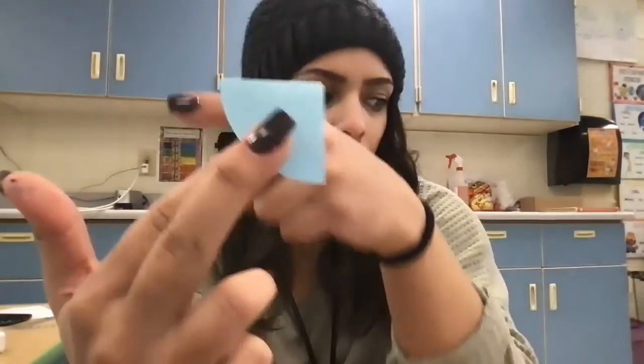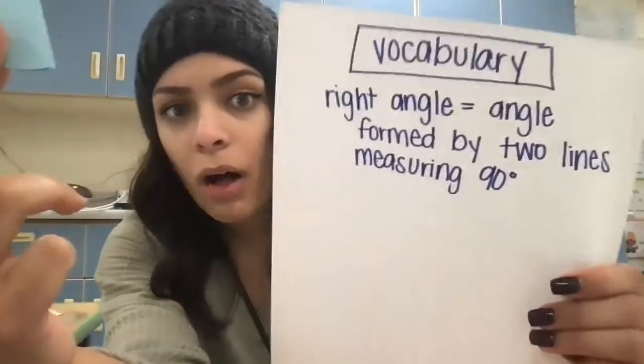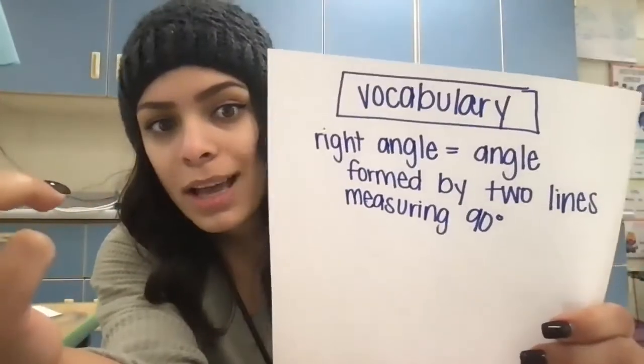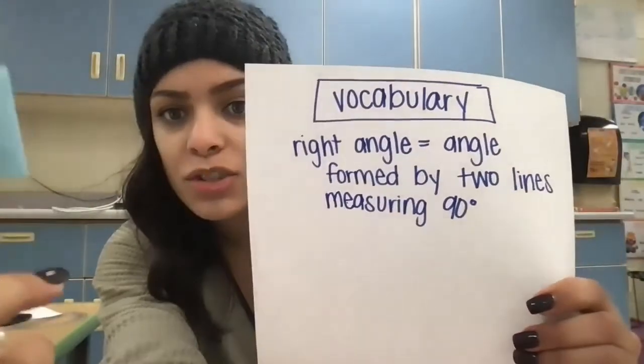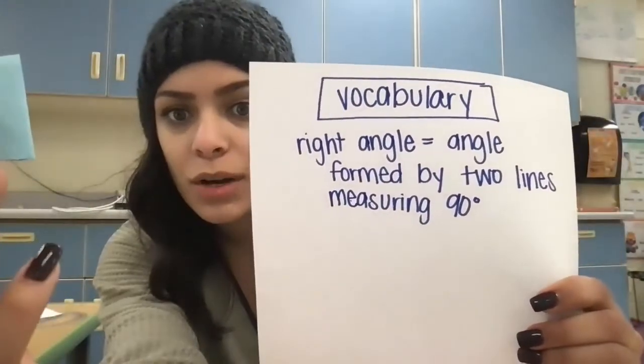Now, this is a special kind of angle. Some of you probably already know what I'm referring to. This is a right angle. A right angle is an angle formed by two lines measuring 90 degrees. When it is 90 degrees, almost like a perfect little L, we have created a right angle.